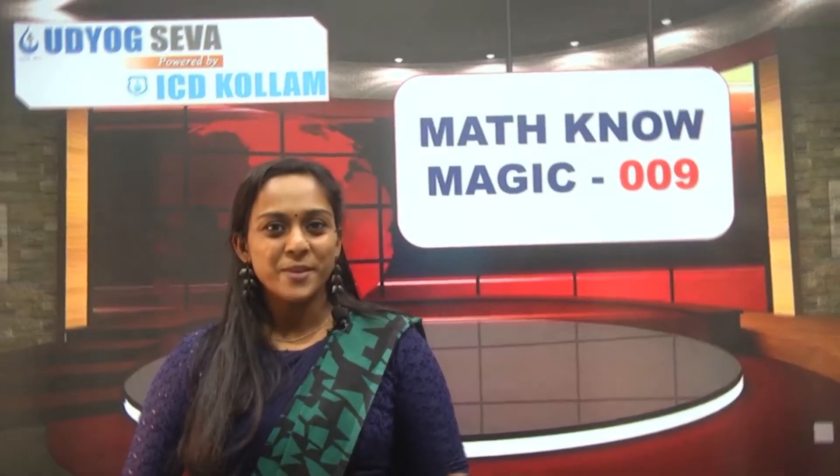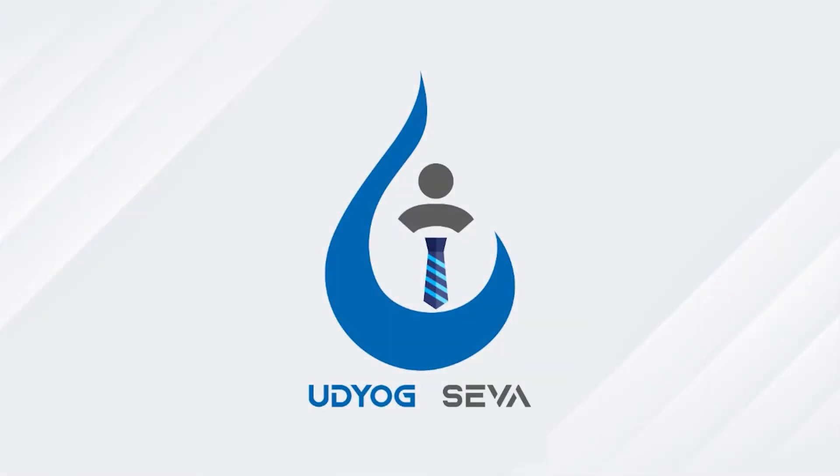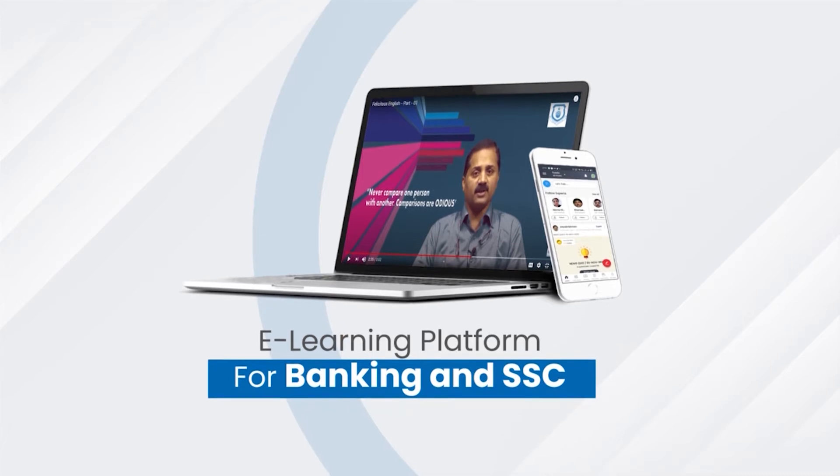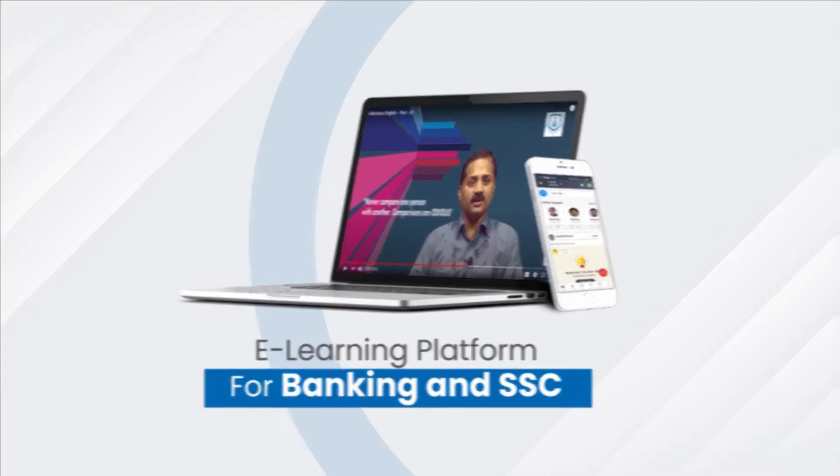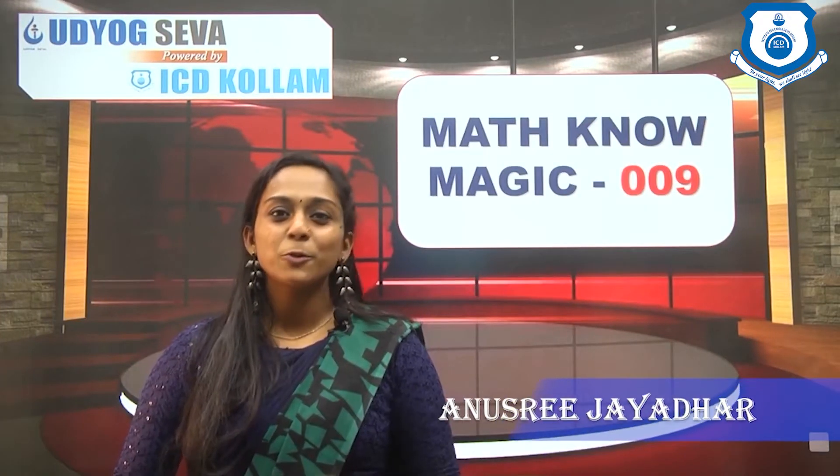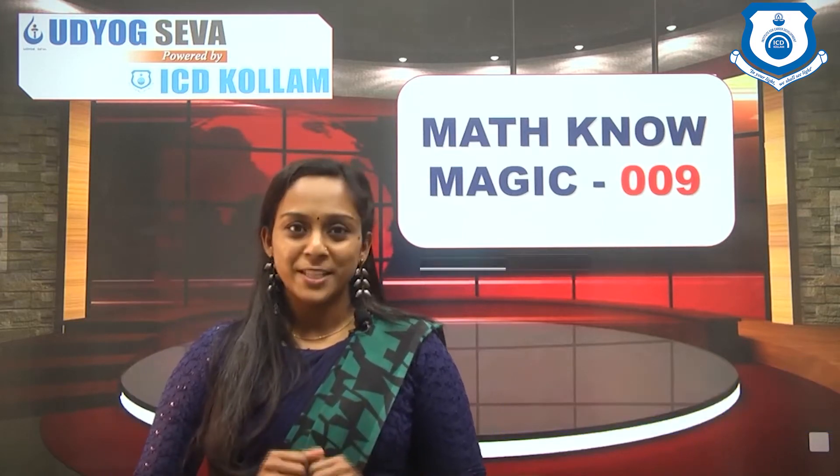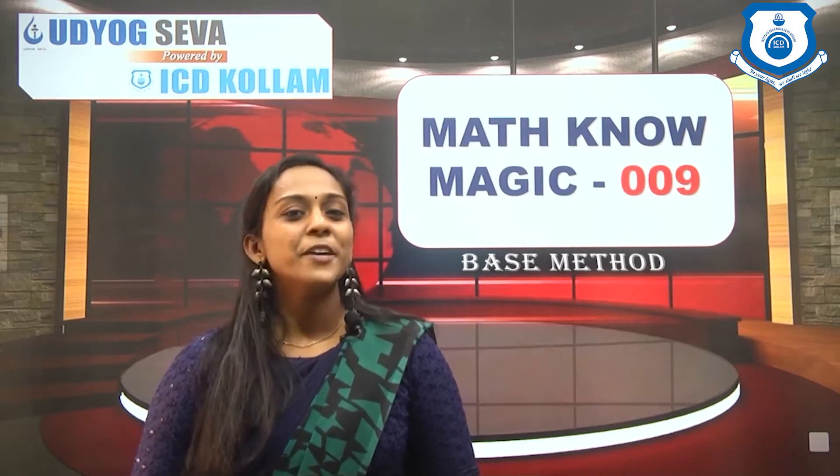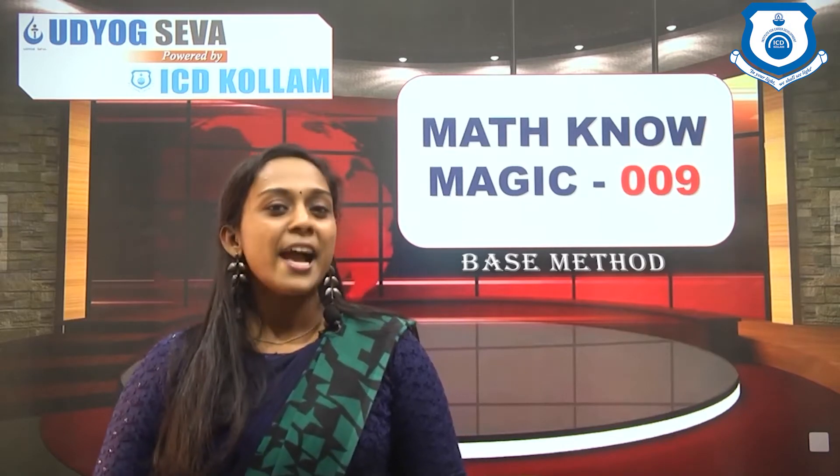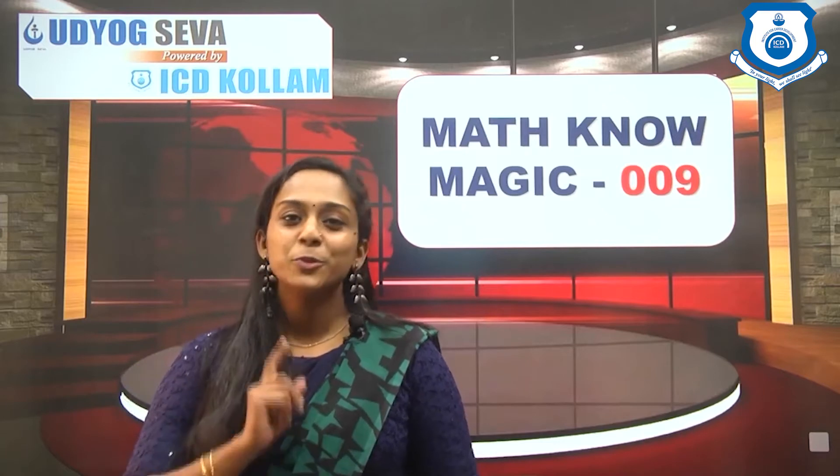Hi everyone, welcome to Math Know. So today we will be discussing how to multiply two numbers with any number of digits. Here we are using base method, and in base method we are choosing a particular number as the base. With reference to that base we are doing the multiplication.